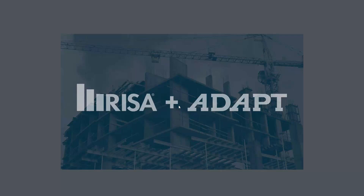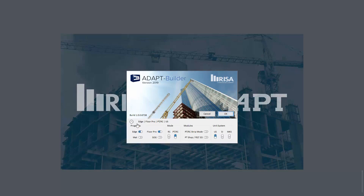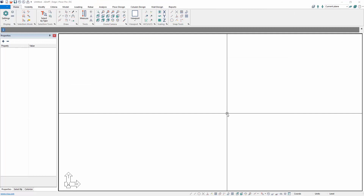This sneak peek video will explore new options coming in Adapt Builder 2020 with respect to floor strip layout, column strip, and middle strip. We're going to launch Adapt Builder — this is more specific to the RC mode of the program, so we'll switch from PTRC to RC. It's important to note that these features are also available in PTRC mode. We'll select RC and OK to open the interface.